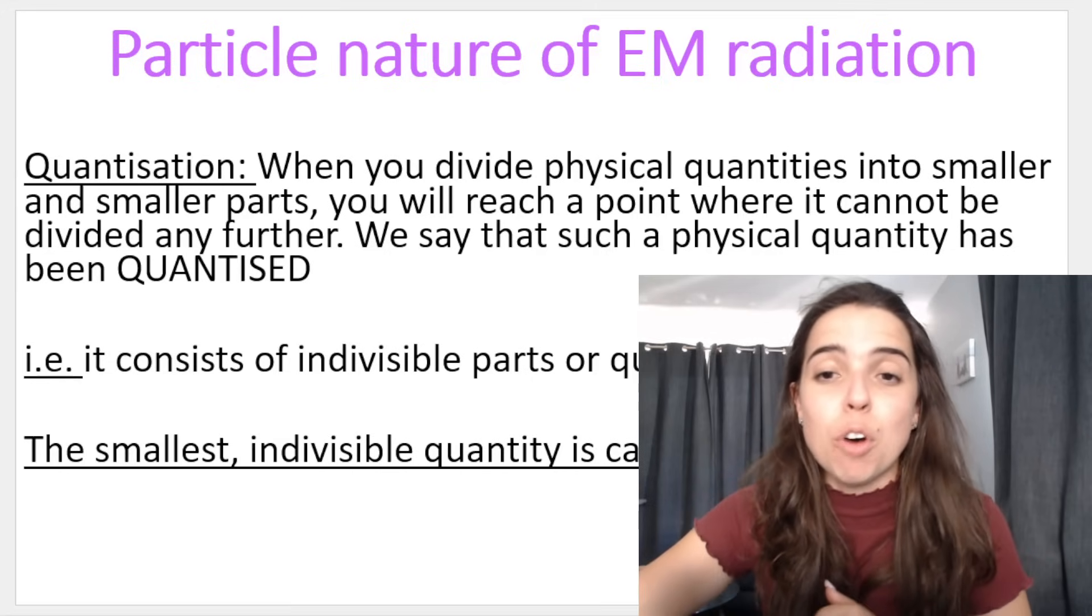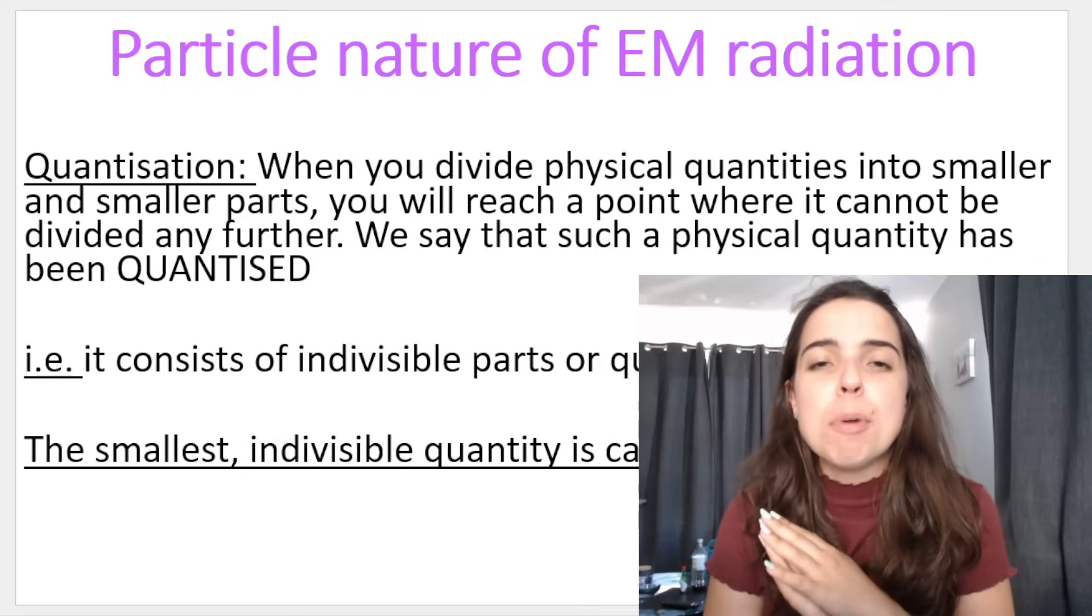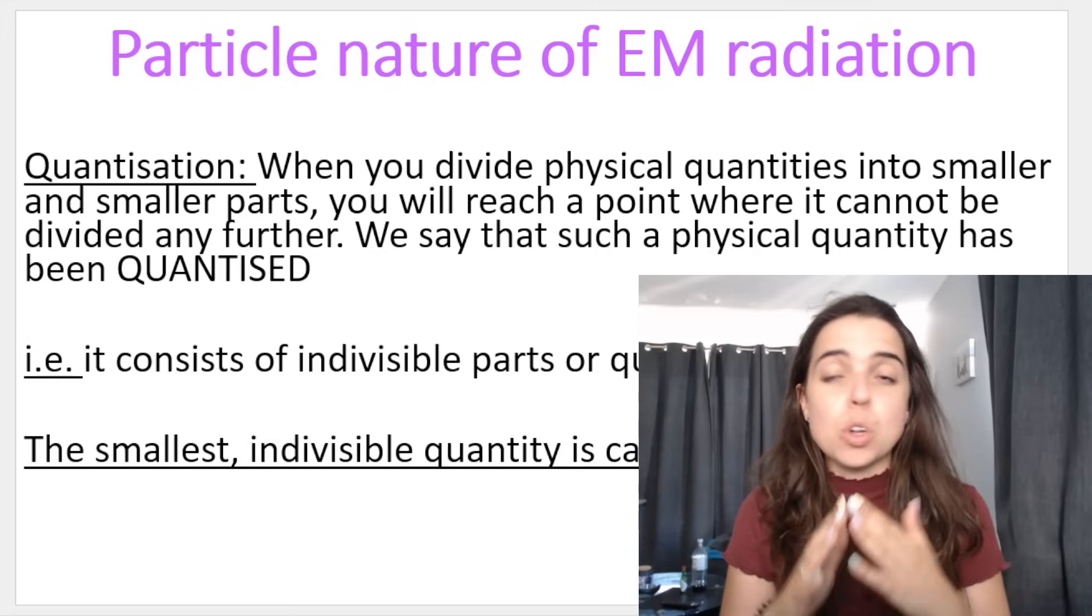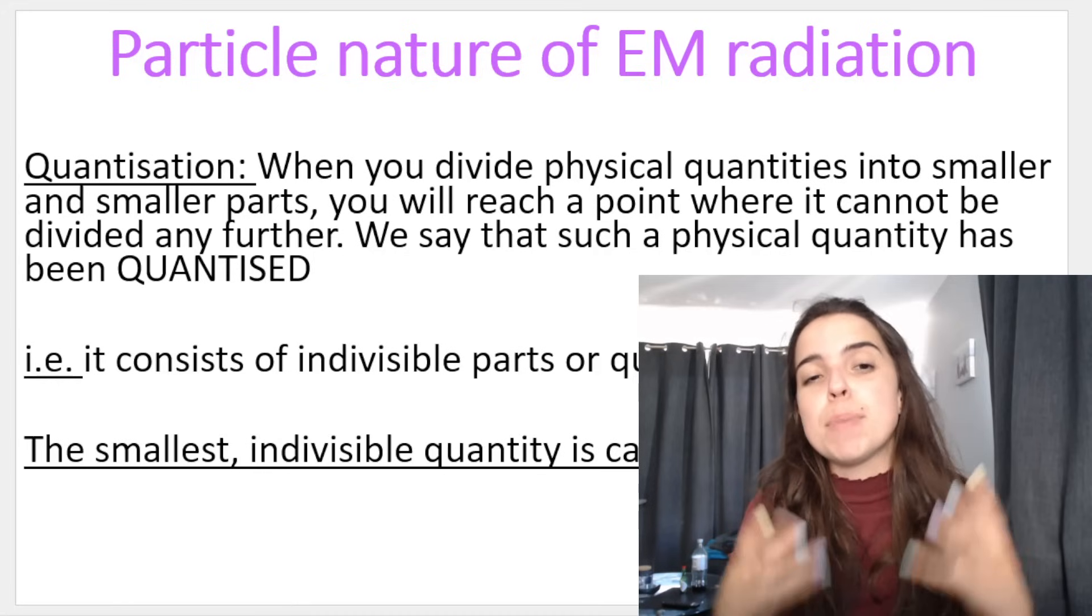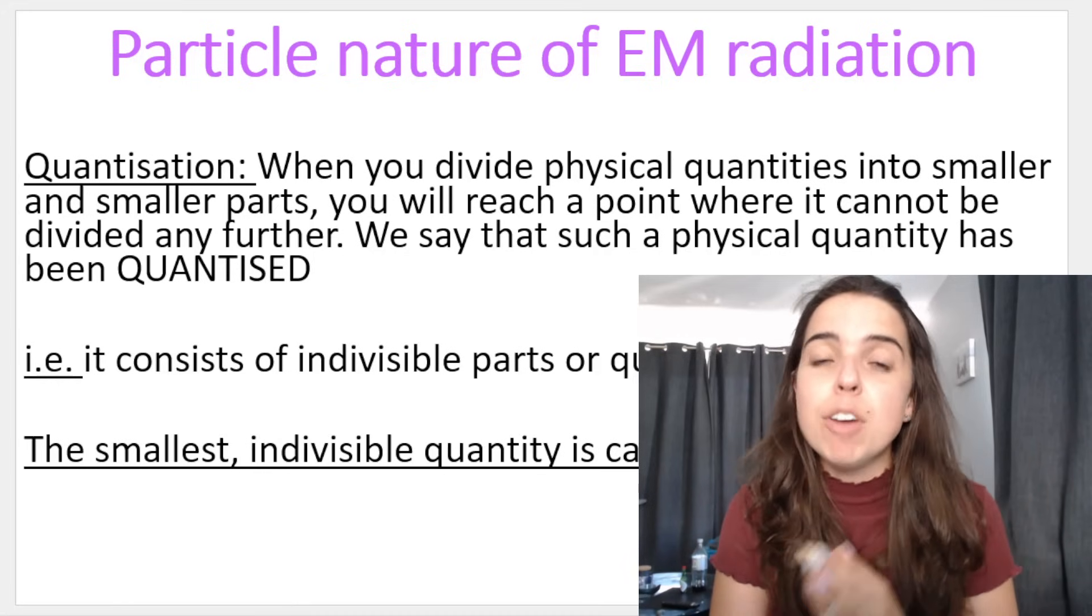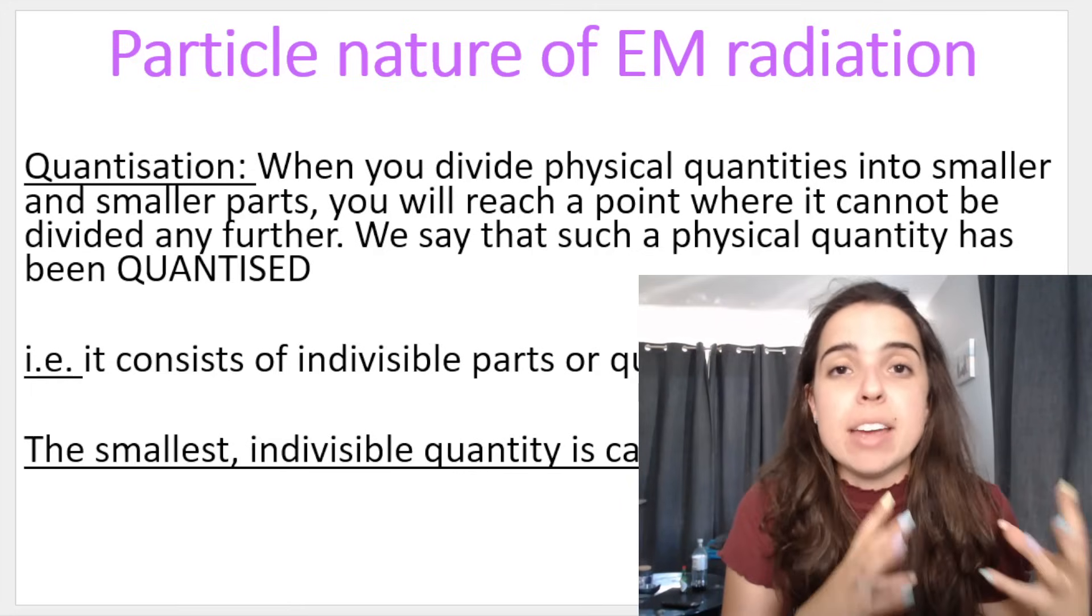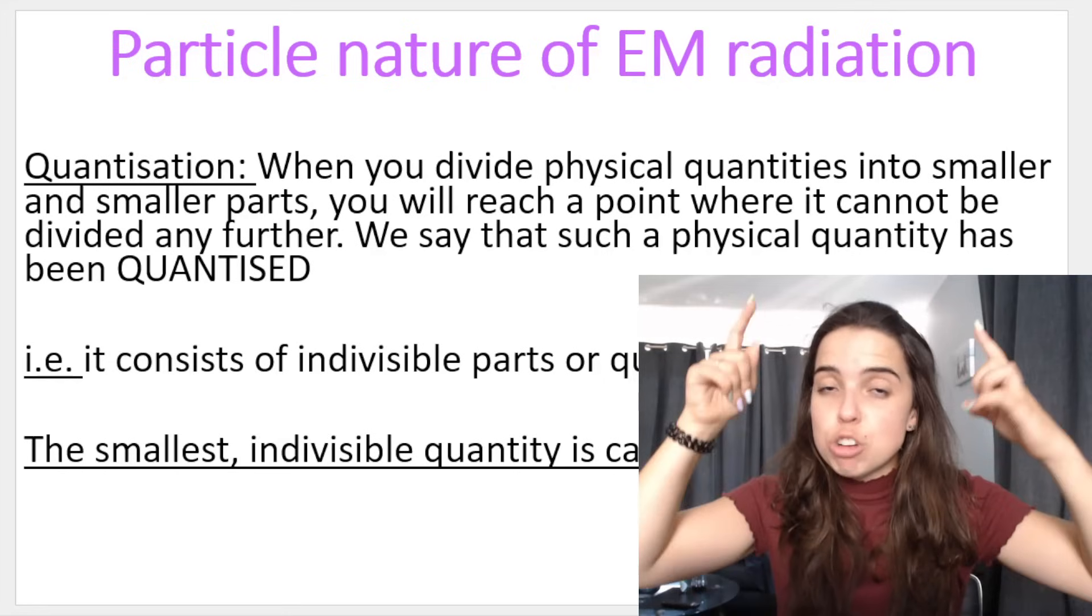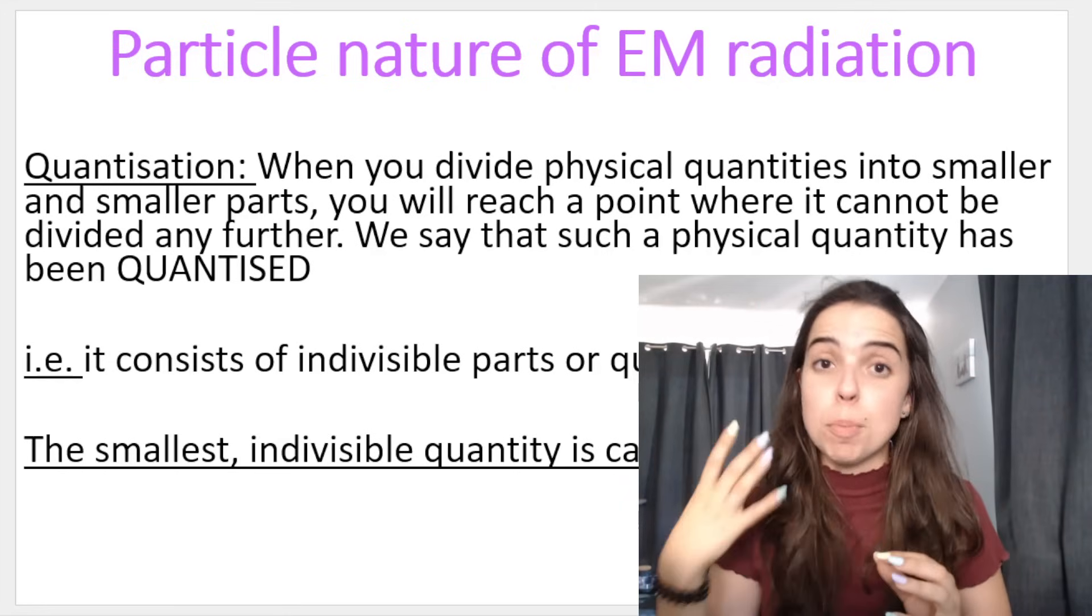So, first of all, what do I mean by particle nature of electromagnetic radiation? Remember, we spoke about electromagnetic radiation as being light. There's a whole spectrum of electromagnetic radiation. I went through that in the previous video, but we simplified by speaking about light. Now, we said light has a wave-particle duality, which means that under different circumstances, light or electromagnetic radiation can act as a wave, or it can act as a particle.